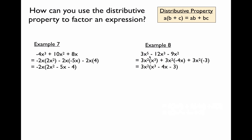For the last example with more complex polynomials, the greatest common factor of the numeric terms is 3. A useful trick: for the variable terms, always look for the smallest exponent. In example 7, they all shared x but not x squared or x cubed. Here, x to the 5th, x to the 3rd, and x squared can all be divided by x squared, but x squared cannot be divided by x cubed. So we factor out 3x squared.